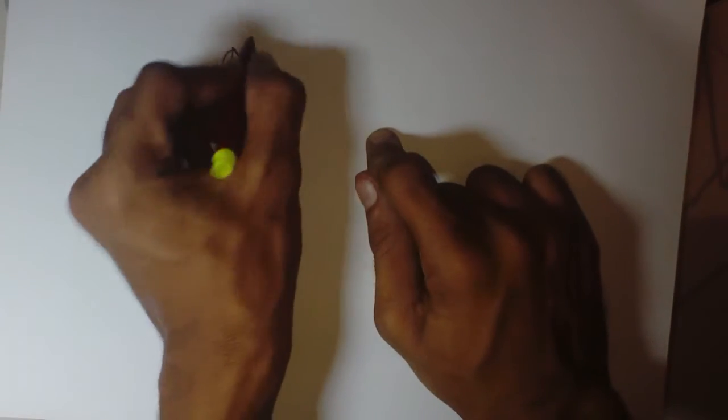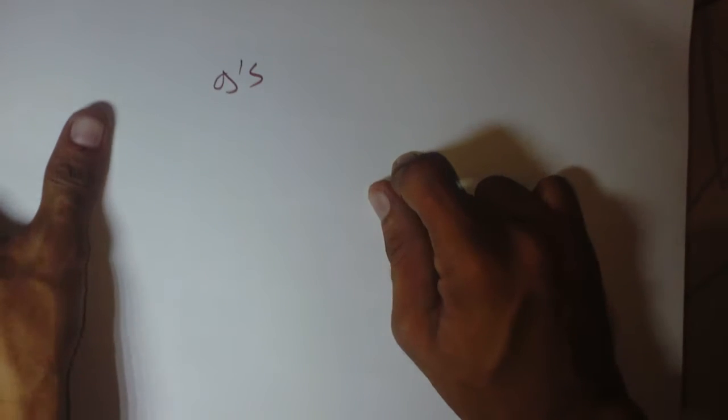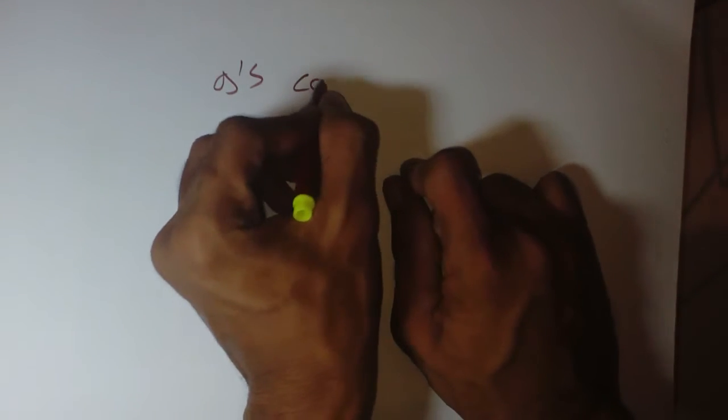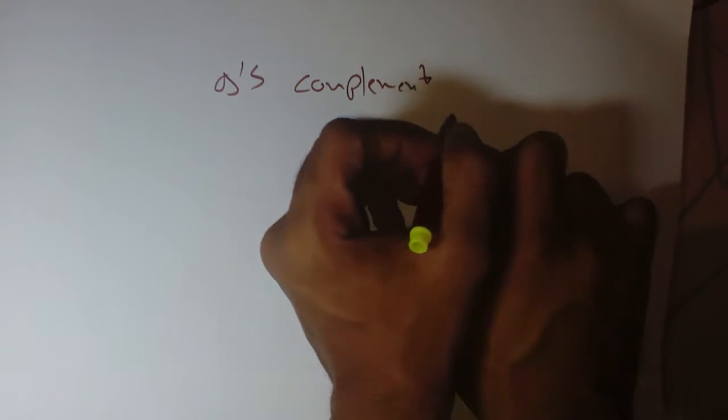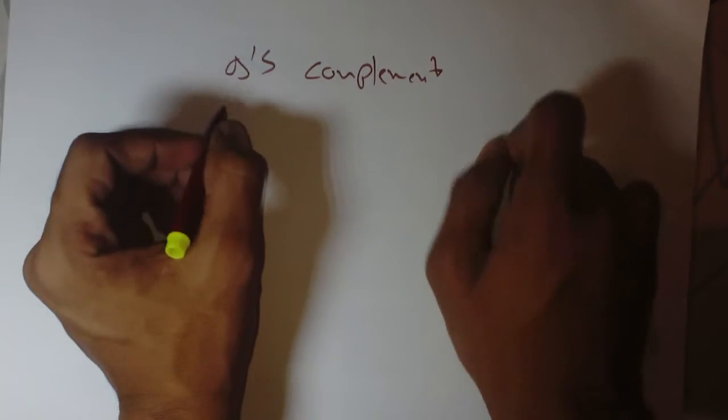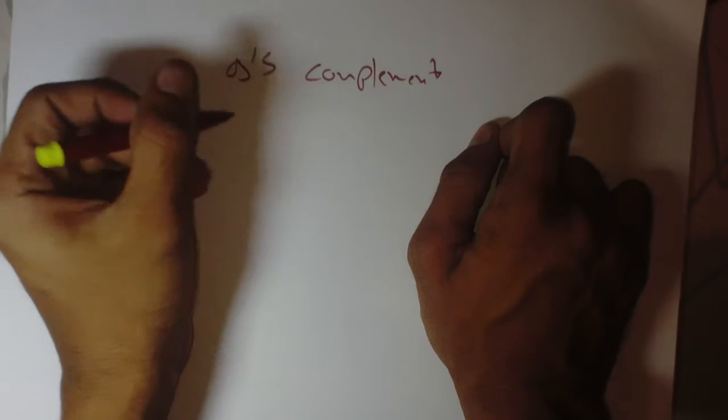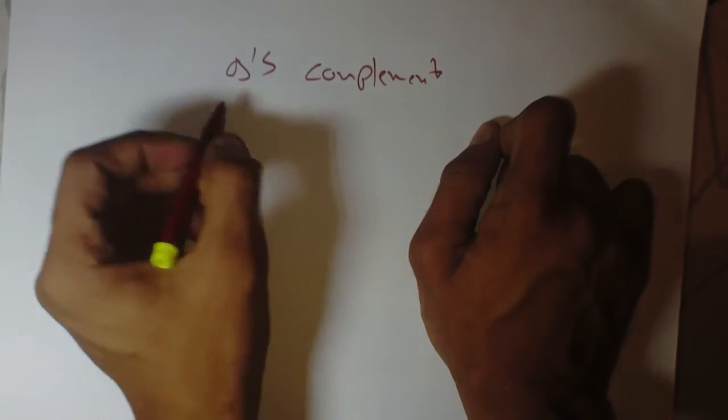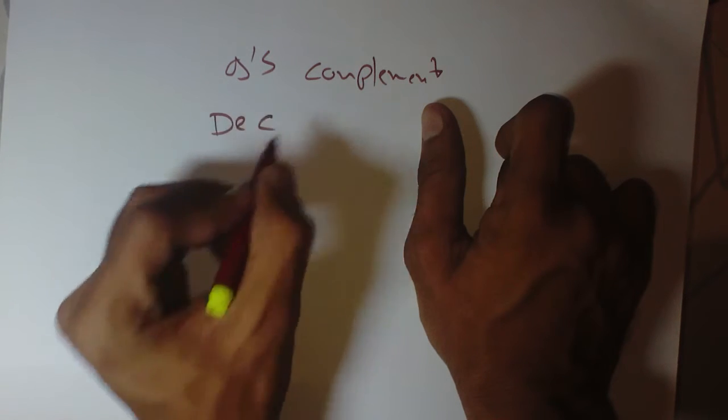Hello people, welcome to this tutorial. In this tutorial we are going to see the 9's complement of a decimal number. So how do we calculate 9's complement of a decimal number? By subtracting the decimal number from 9. So to make this simple, I'll make two tables here. This will indicate decimal number.